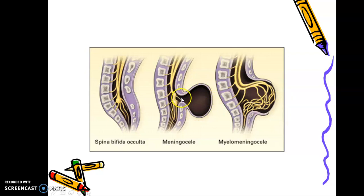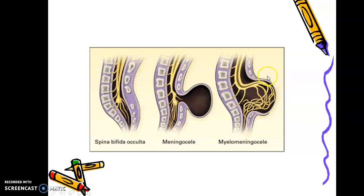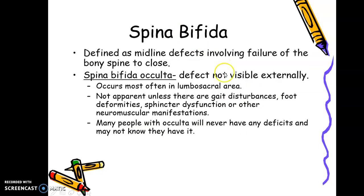In spina bifida occulta the spinal cord is intact, the meninges and thecal sac are intact — only the bony closure of the posterior vertebral column is absent. In the more severe form, the whole posterior spine bulges out like a cyst filled with CSF, with meninges protruding outside along with some cauda equina and peripheral nerves. This is called meningocele.